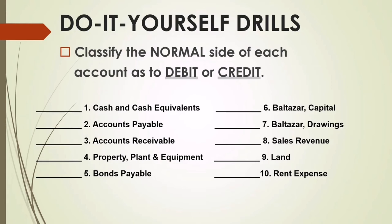Number five: funds payable is categorized as a liability. The normal side of liability is credit, so the answer for number five is credit. Number six: Balthazar Capital — capital is under owner's equity, and the normal side of capital is credit, so the answer for number six is credit. Number seven: drawings or withdrawals are the same, and the normal side of withdrawals or drawings is debit — the answer for number seven is debit. Number eight: sales revenue — the normal side of the revenue account is credit, so the answer for number eight is credit.